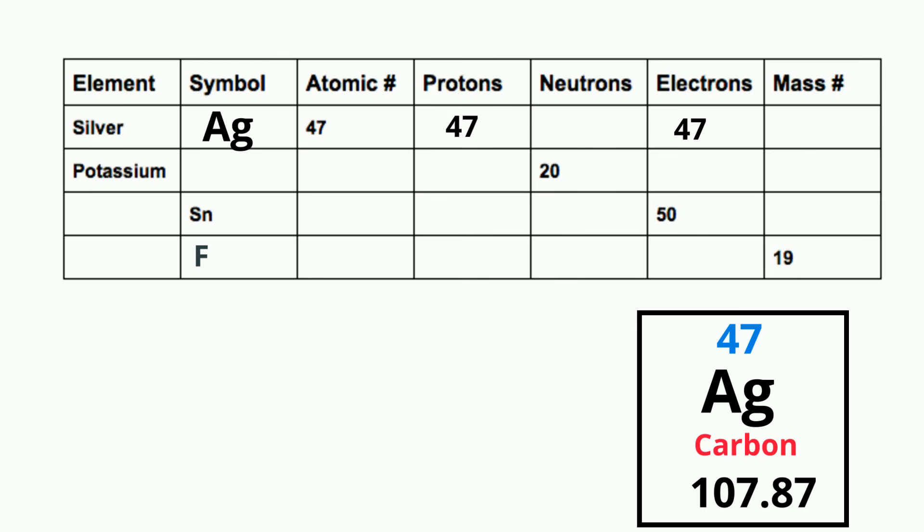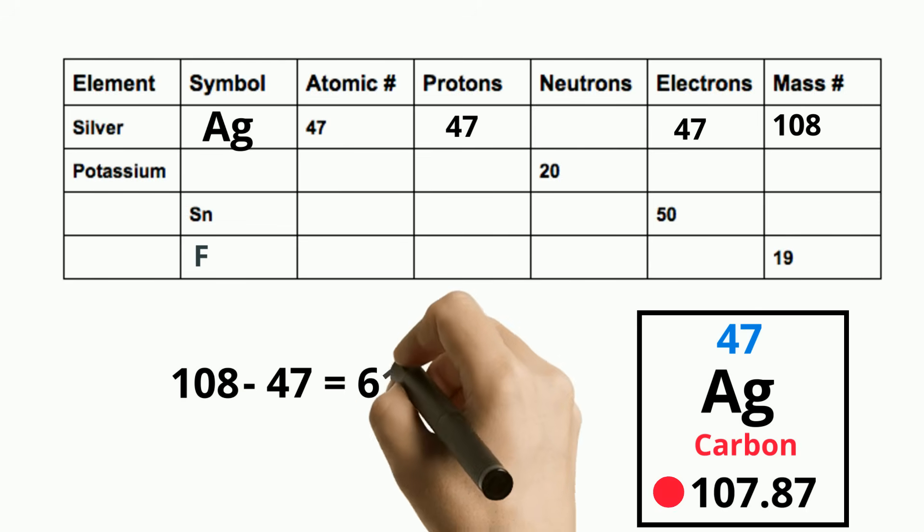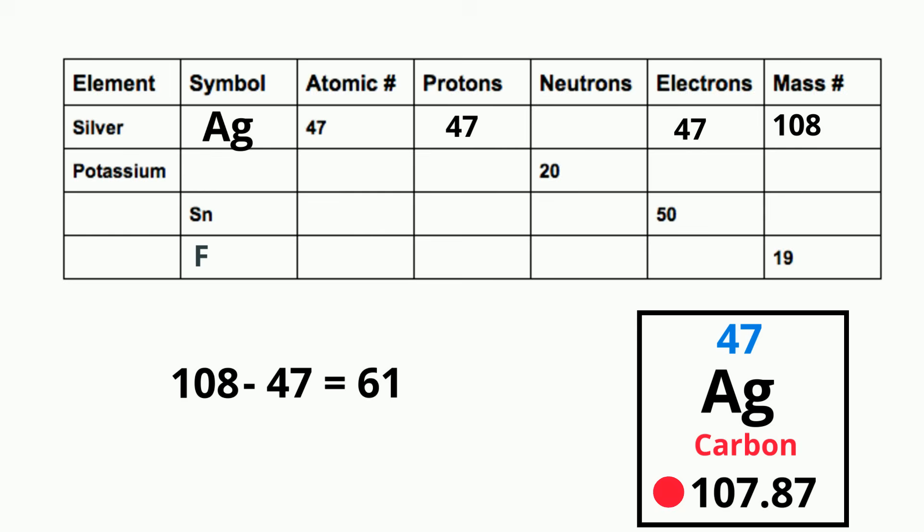Now let's find the mass number. We will round 107.87 and we will round that to 108. Now to find the neutrons, we take the mass number, which is 108, and then we are going to subtract the number of protons, which is 47. And when you do that, 108 minus 47 equals 61. So we will have 61 neutrons.